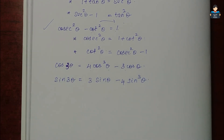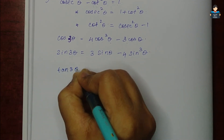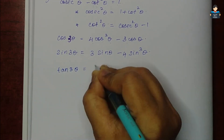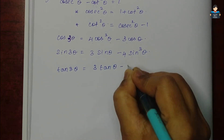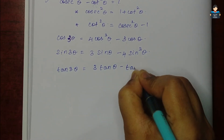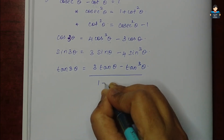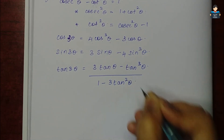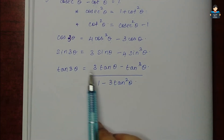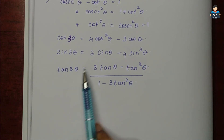The formula for tan3θ is: tan3θ = (3tanθ - tan³θ) / (1 - 3tan²θ). This is the triple angle formula for tangent.